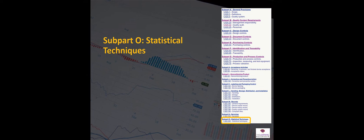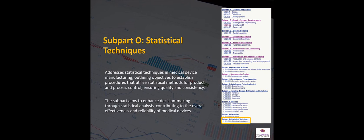And if you use statistics in your processes — which is highly likely because we're dealing with manufacturing situations — what are the statistical techniques you're using and why have you chosen those particular methods? The requirements for that are outlined in sub-part O. And that is a whirlwind tour of 21 CFR 820. I hope it gives you an understanding of the structure and the content of this particular regulation.